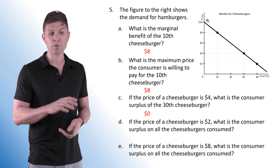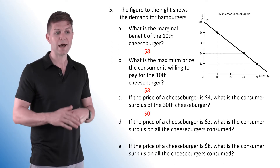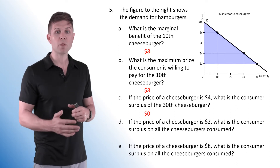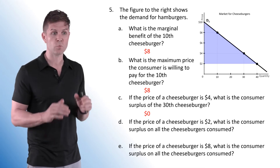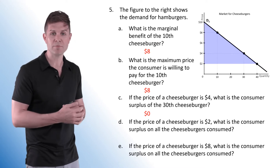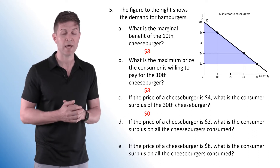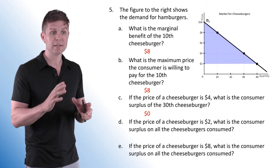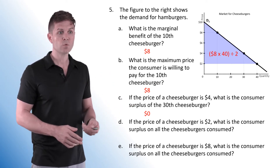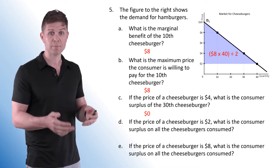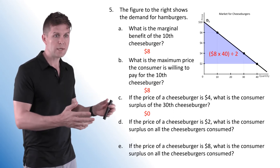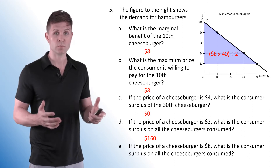For D: if the price of a cheeseburger is $2, what is the consumer surplus on all cheeseburgers consumed? We want to look at the entire triangle — all the consumer surplus received by all consumers when the price is $2. People willing to pay $10, $6, or $4 are all getting extra satisfaction since the price is only $2. The size of this triangle represents total consumer surplus. Area equals base times height divided by 2: height is 8, base is 40, divided by 2 gives us $160 worth of consumer surplus.